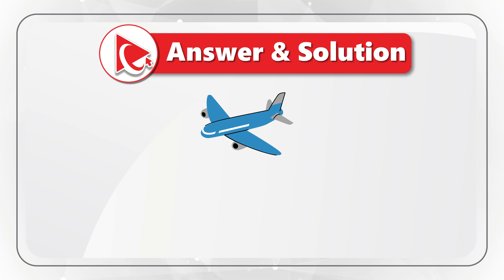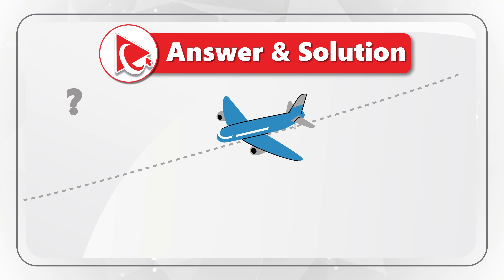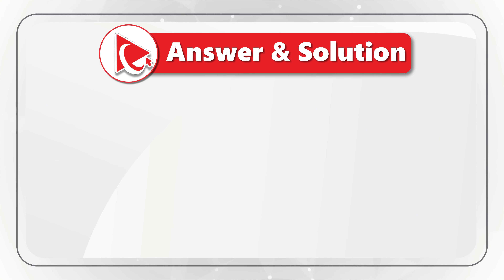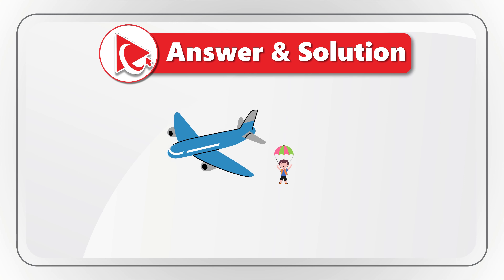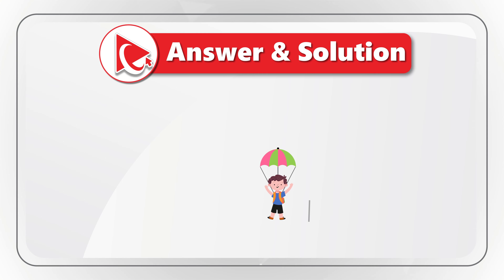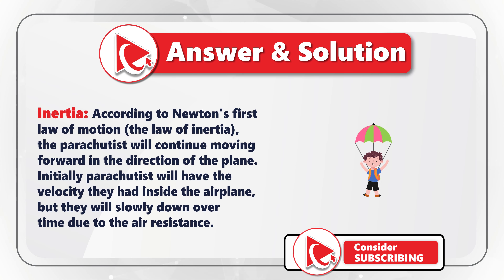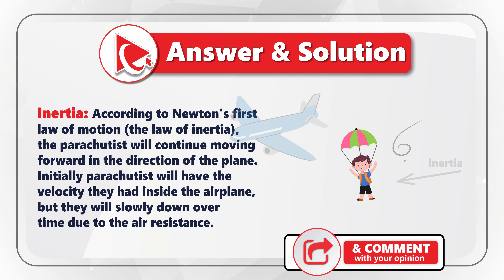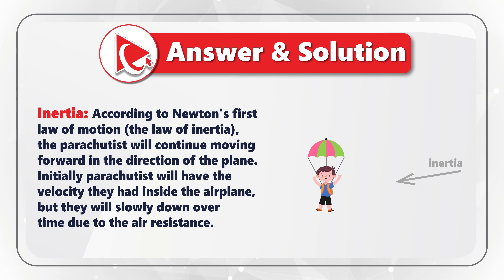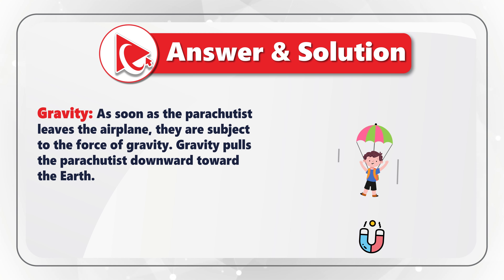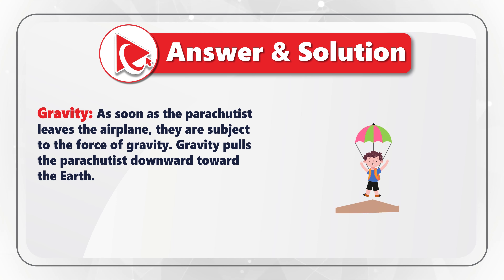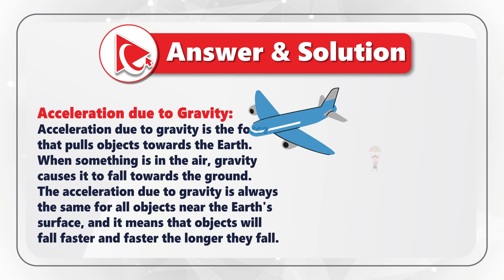To better understand the answer, we need to determine what changes from when the parachutist is inside the plane versus when they jump. When inside the plane, both the parachutist and airplane are moving together in the same direction. When the parachutist jumps, multiple forces determine the trajectory. Number one is inertia — according to Newton's first law of motion, the parachutist will continue moving forward in the direction of the plane, initially having the same velocity but slowing down over time due to air resistance. Another force is gravity, which pulls the parachutist downward toward the Earth.